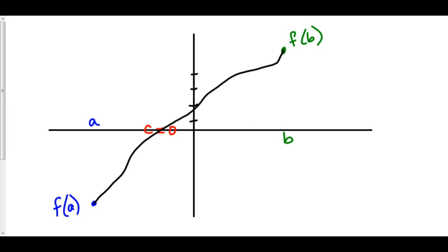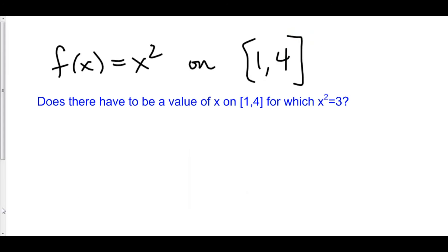Let's do an example for how we would use IVT in a problem. Does there have to be a value of x on the interval from one through four for which x squared is equal to three? Now consider f of x equals x squared on the interval from one to four. Is x squared continuous on that interval? Yes.